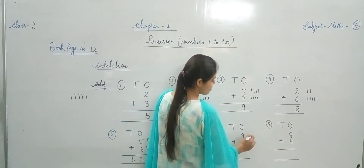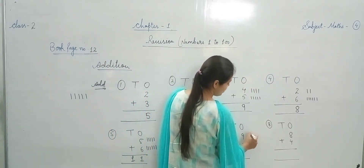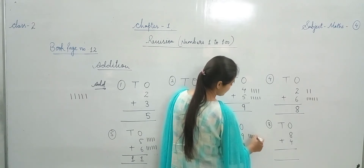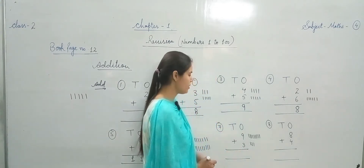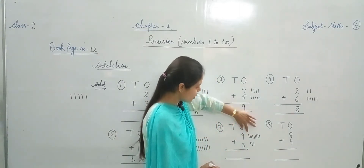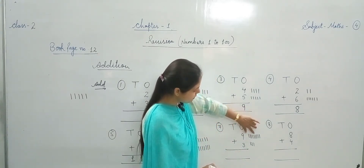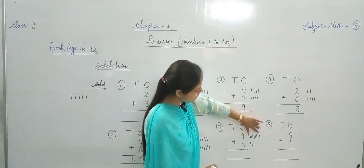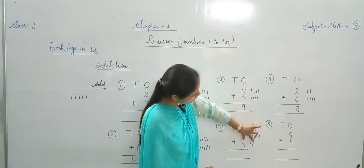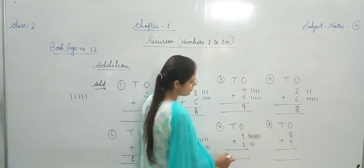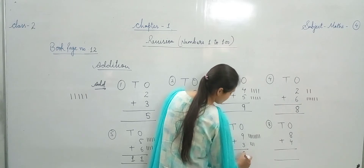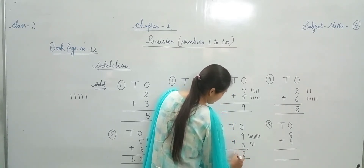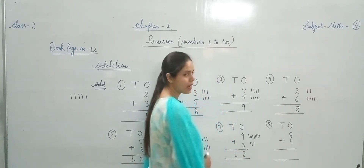Next — 9 plus 3. 9 lines और 3 lines draw करते हैं। Count कीजिए — 1, 2, 3, 4, 5, 6, 7, 8, 9, 10, 11, 12. 9 plus 3 makes 12. 2 goes in the Ones column, 1 in the Tens column.